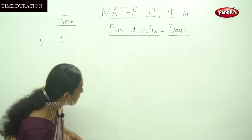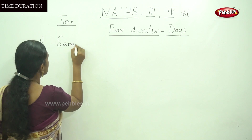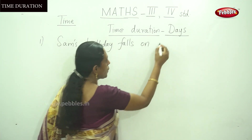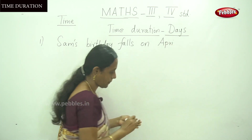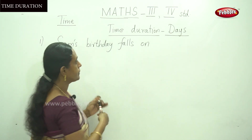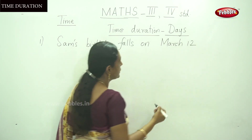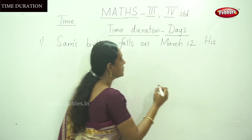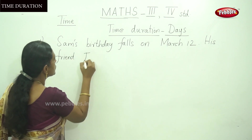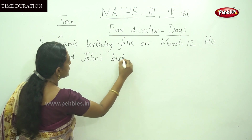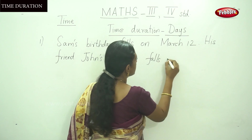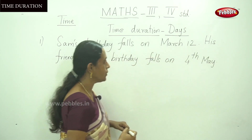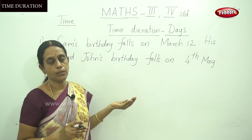Sam is a person. Sam's birthday falls on March 12. His friend John's birthday falls on 4th May. How many days are between these two birthdays? Calculate the number of days between these two events.